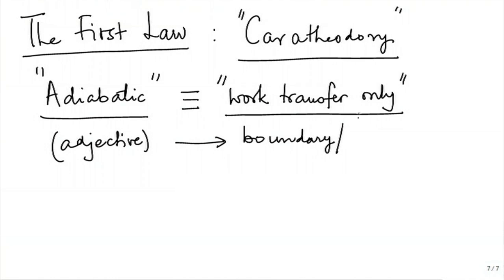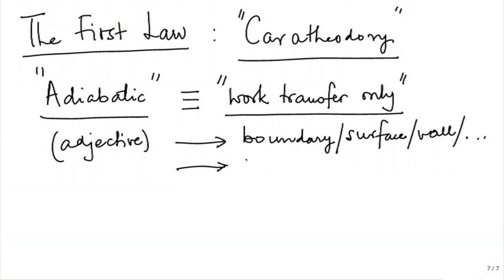If we find that all interactions are purely work interactions, the boundary is adiabatic. The adjective adiabatic can be applied to a boundary, surface, wall, partition, or interface — meaning only work transfer is allowed across it. An adiabatic system means a system constrained such that it can do only work-type interactions, naturally fully bounded by adiabatic walls and partitions.